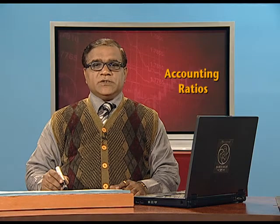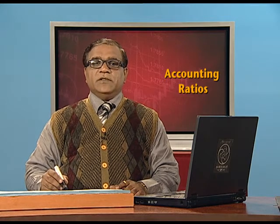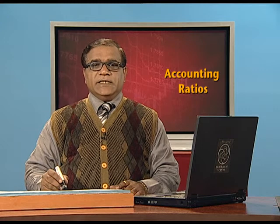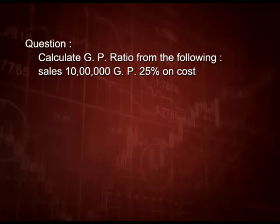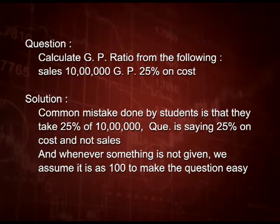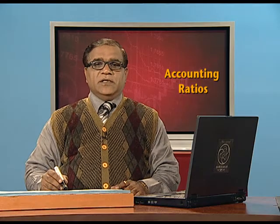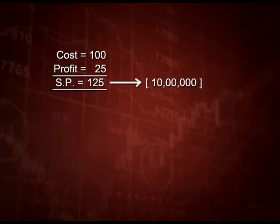Let us do some questions on profitability ratios, starting with GP ratio. Let us say sales are 10 lakh and gross profit is 25 percent on cost. The common mistake made by students is that they take 25 percent of 10 lakh, but the question says 25 percent on cost, not on sales. Whenever something is not given, we assume it as 100 to make the question easy. So let us take cost as 100 — profit will be 25, making selling price 125.